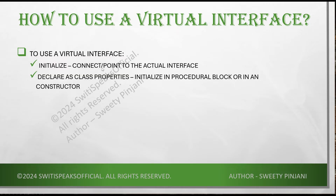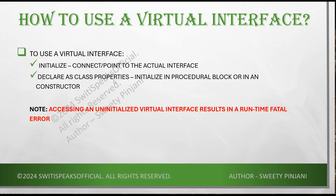These are two ways: you connect it to the actual interface, or you initialize it inside the constructor or procedural block. But you must initialize it. What happens if you try to access an uninitialized virtual interface? It will result in a runtime fatal error. Because if it is not pointing to anything, what will you access? That is why it results in a fatal error at runtime.